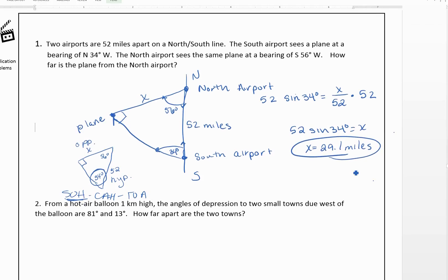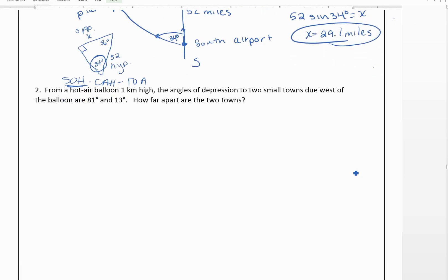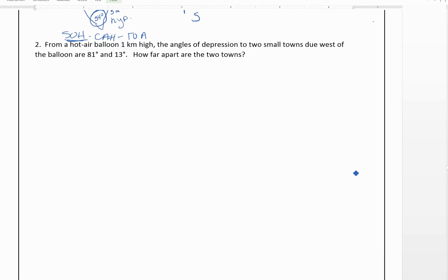Okay, let's look at another one. So it says, from a hot air balloon one kilometer high, the angles of depression of two small towns due west of the balloon are 81 degrees and 13 degrees. How far apart are the two towns?